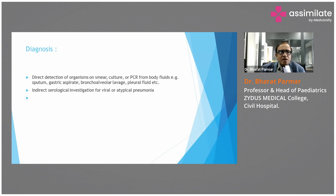How to diagnose pneumonia? Direct detection of organism on smear, culture, or PCR from body fluid — that is sputum, gastric aspirate, bronchoalveolar lavage, and pleural fluid. For indirect serological investigation for viral or atypical pneumonia, there is mycoplasma pneumonia serology.